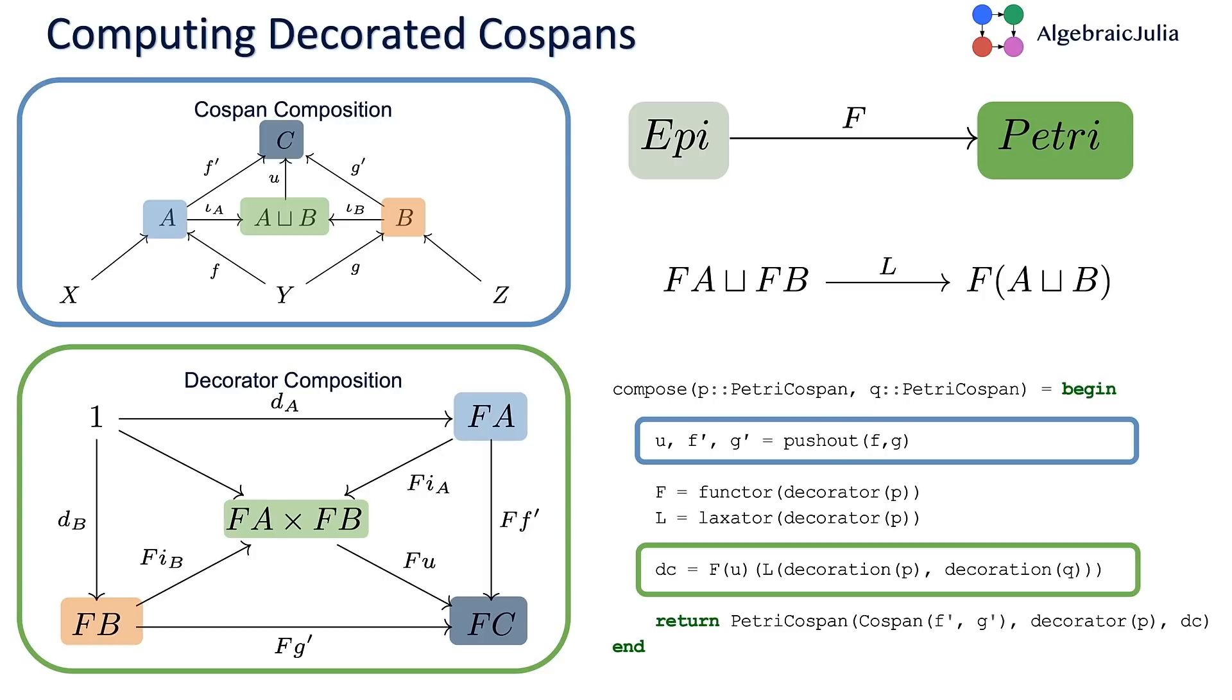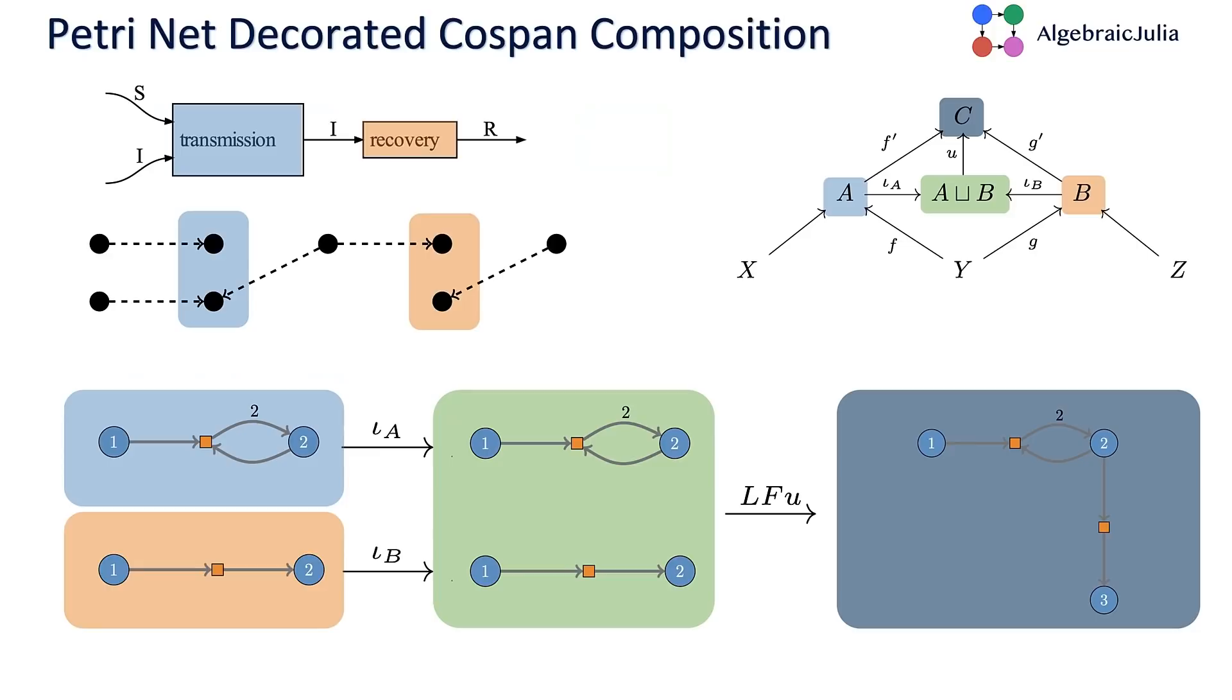We're going to use a category theoretic construction called decorated cospans. The way decorated cospans are designed is via these category theoretic diagrams. We can read off the diagrams the algorithm for how to compose our Petri nets. I'll illustrate it in an example. You want to compose the transmission and recovery processes, and you're going to have this pair of cospans.